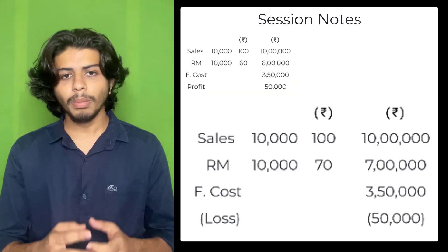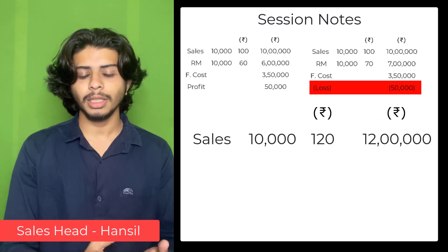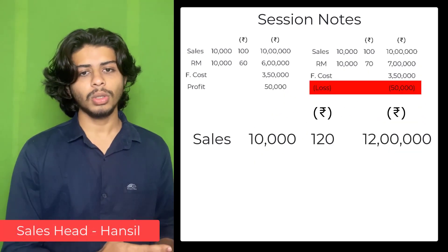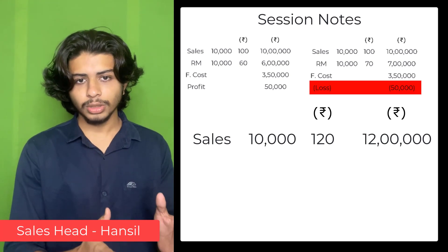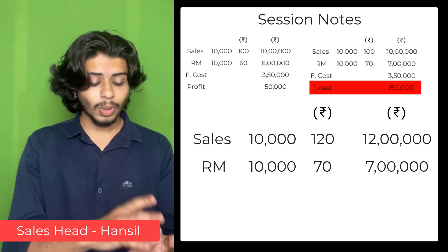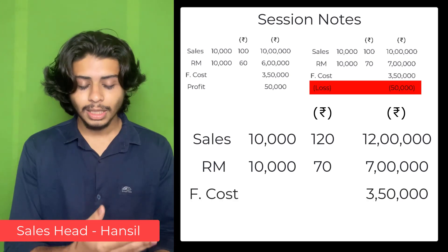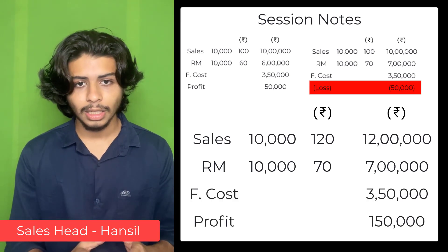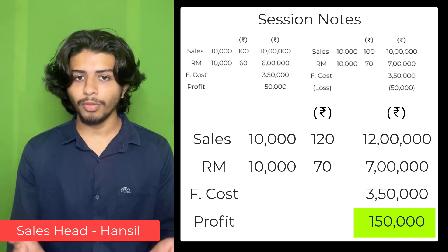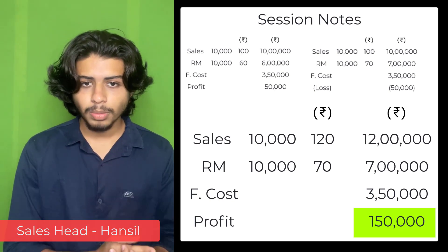My suggestion is that we increase our selling price from ₹100 to ₹120. This would increase our sales from ₹10 lakh to ₹12 lakh. That ₹12 lakh would cover both raw material cost and fixed cost, and by the end of the year we would also get a profit of ₹1,50,000 — solving all our problems.